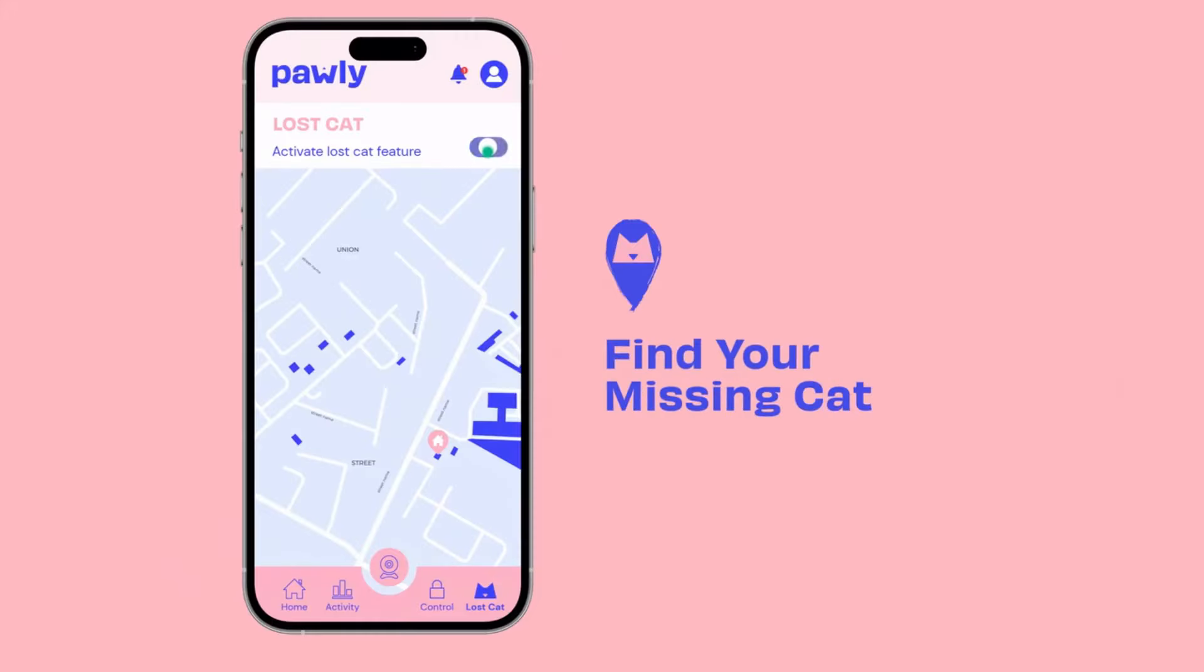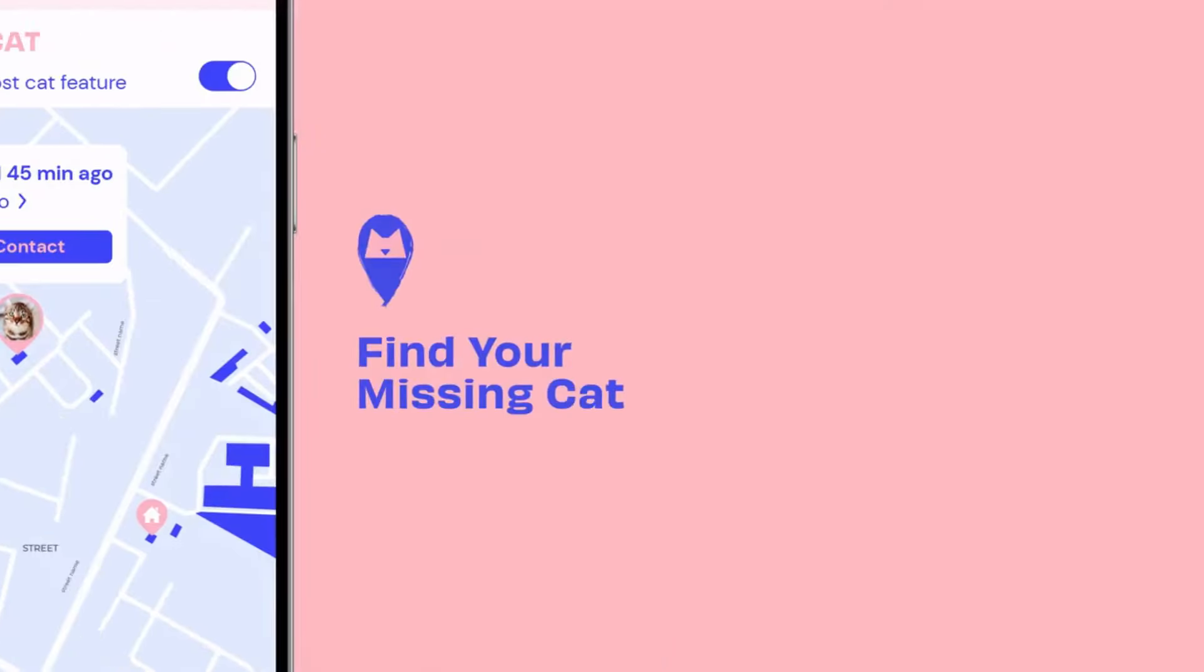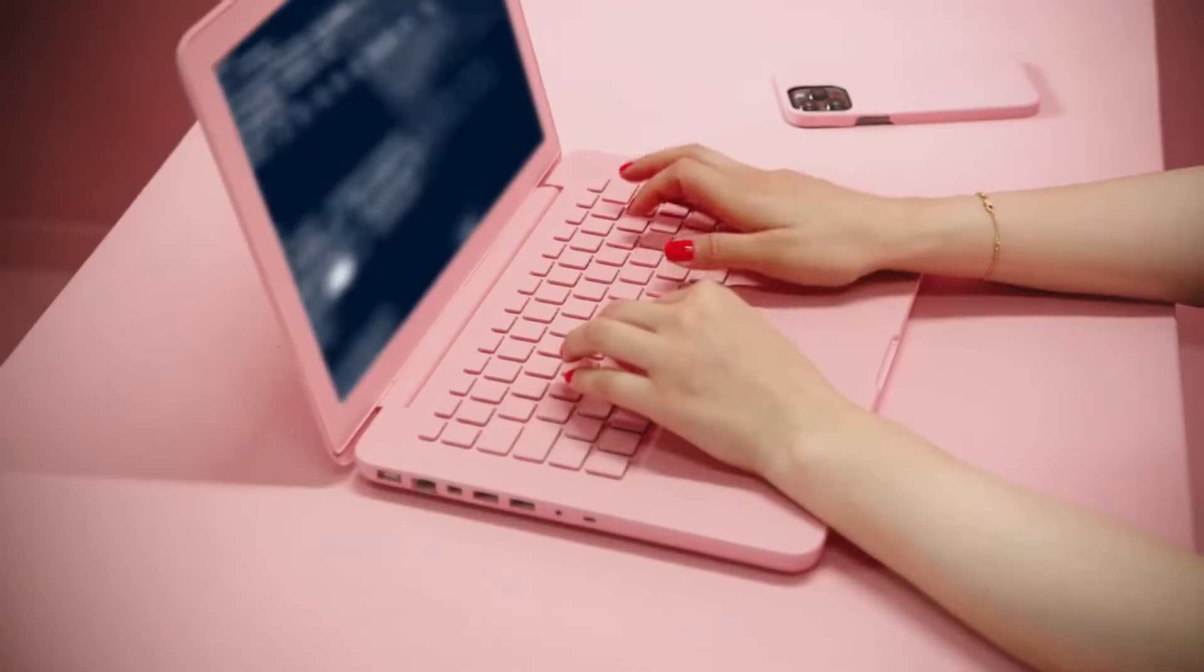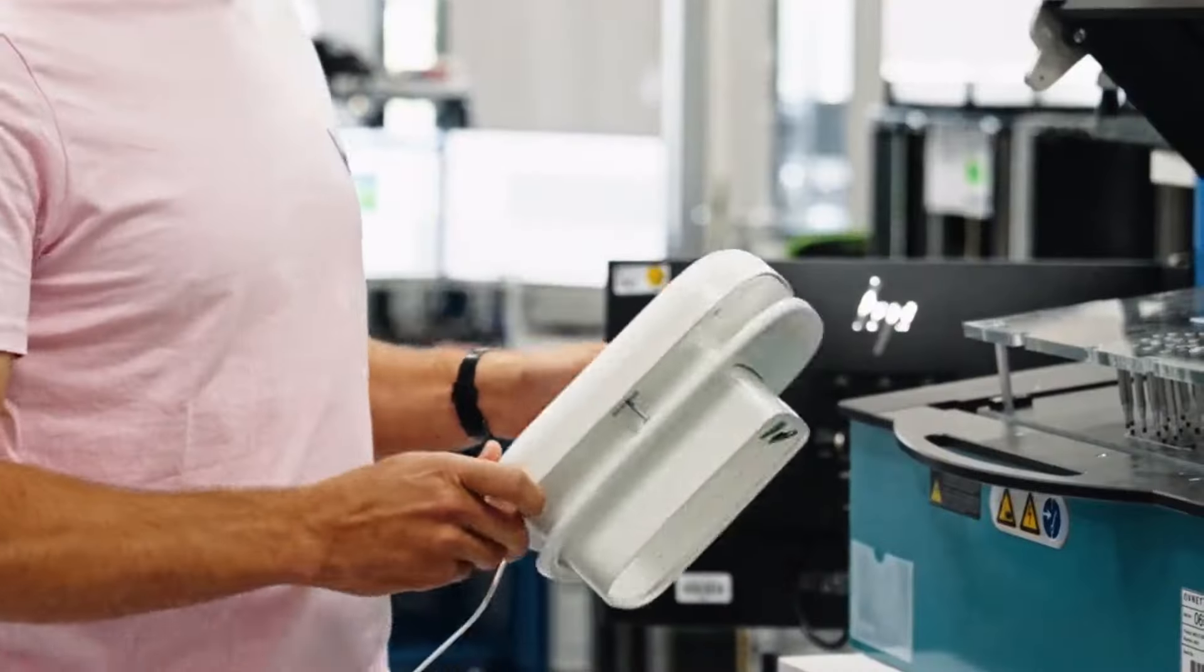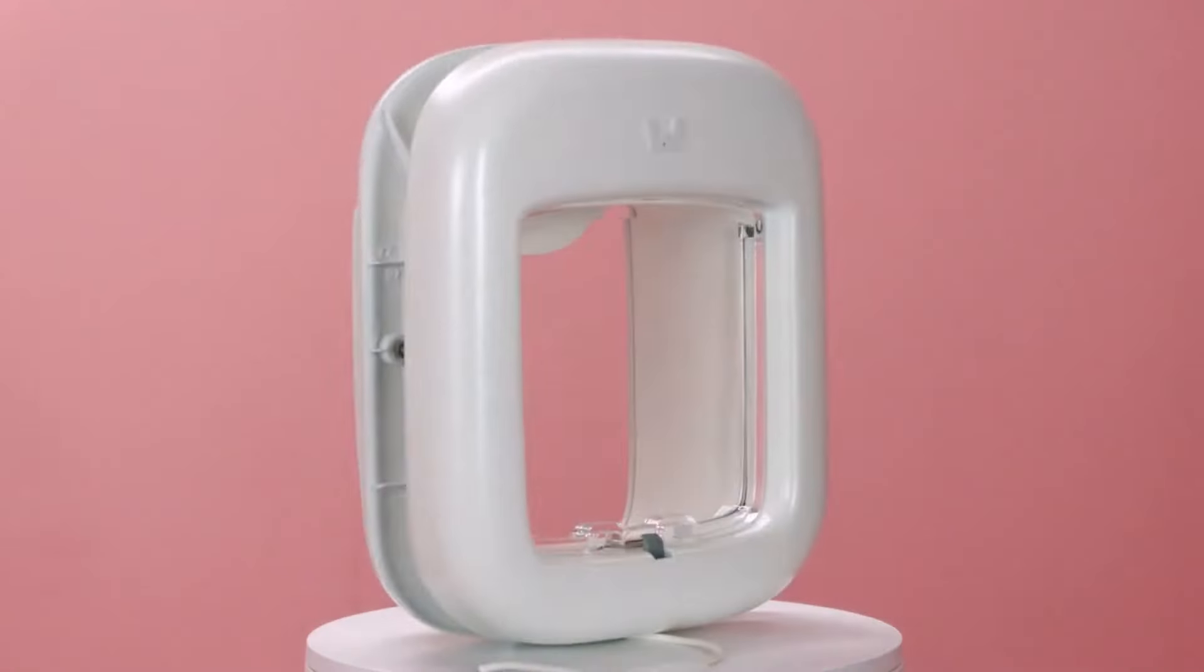The Poly Door offers customizable settings to tailor the door's behavior according to your preferences. You can adjust the sensitivity of the prey detection system, set specific access times for your cat, and even track their comings and goings through a companion mobile app.